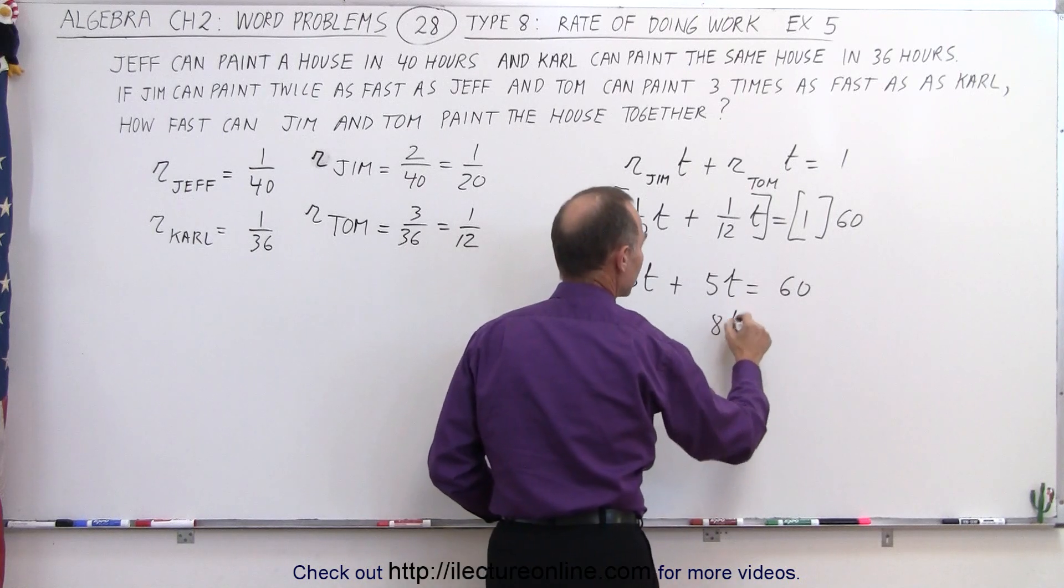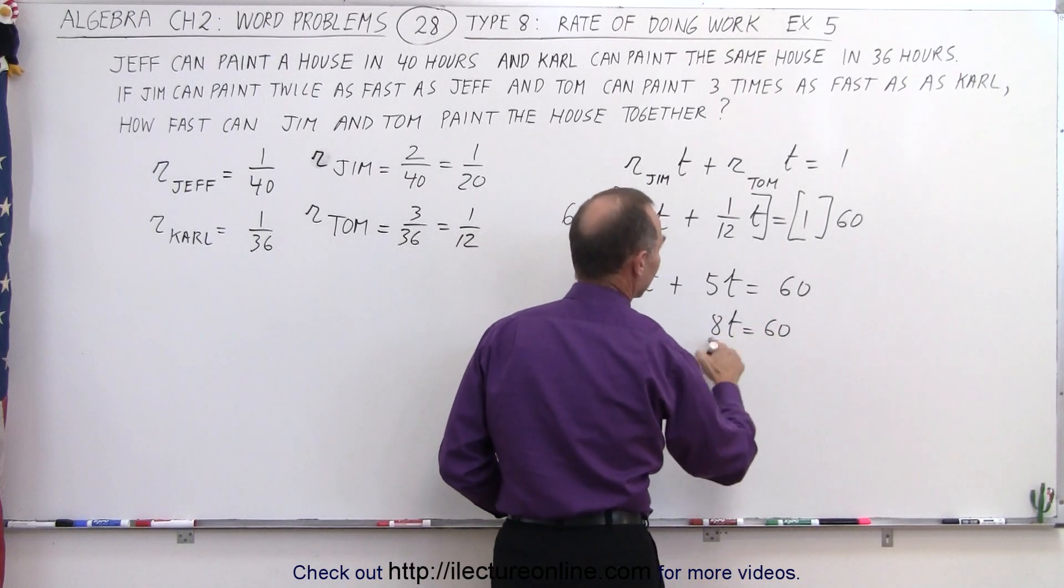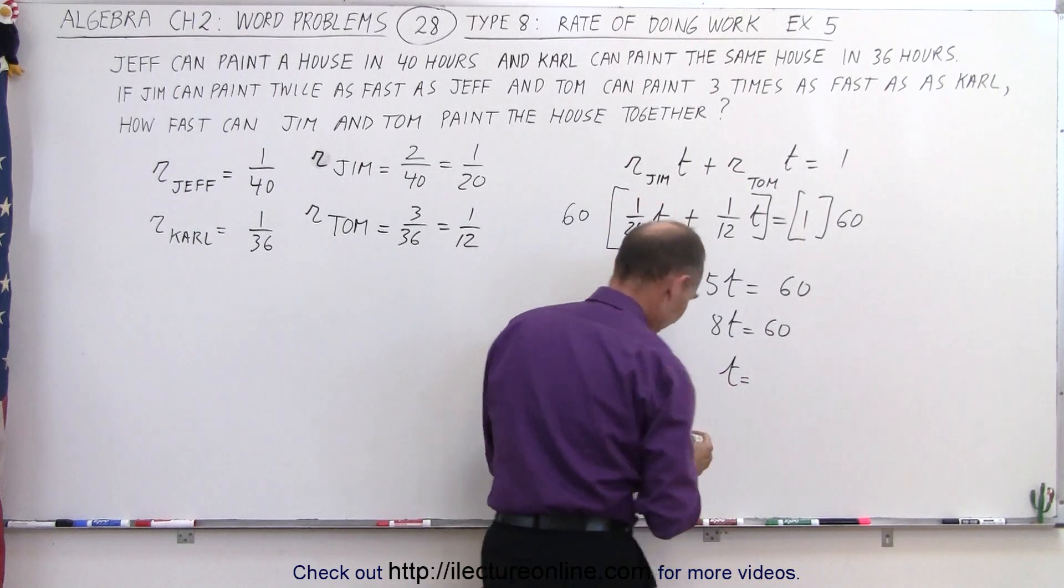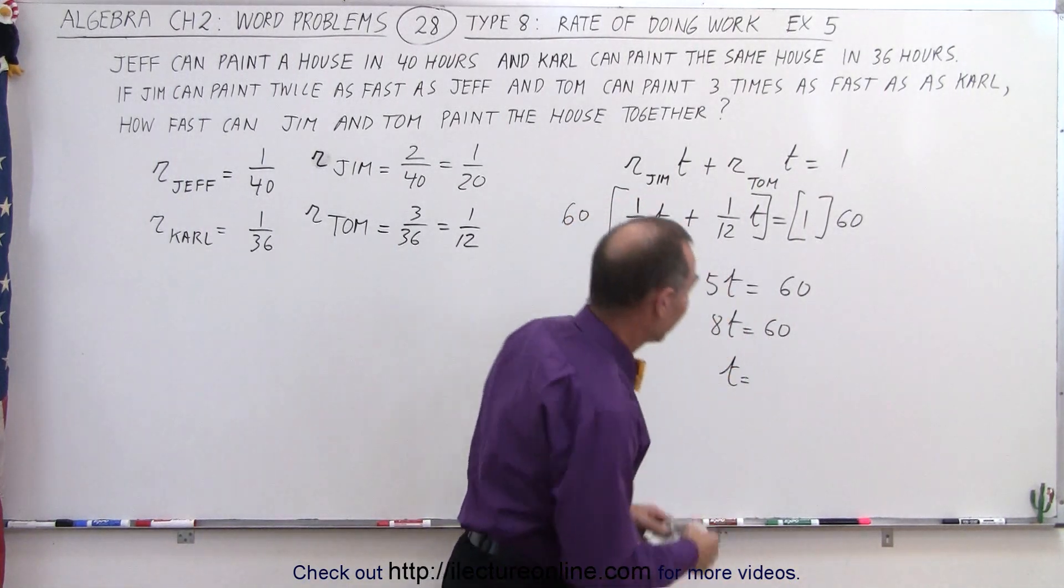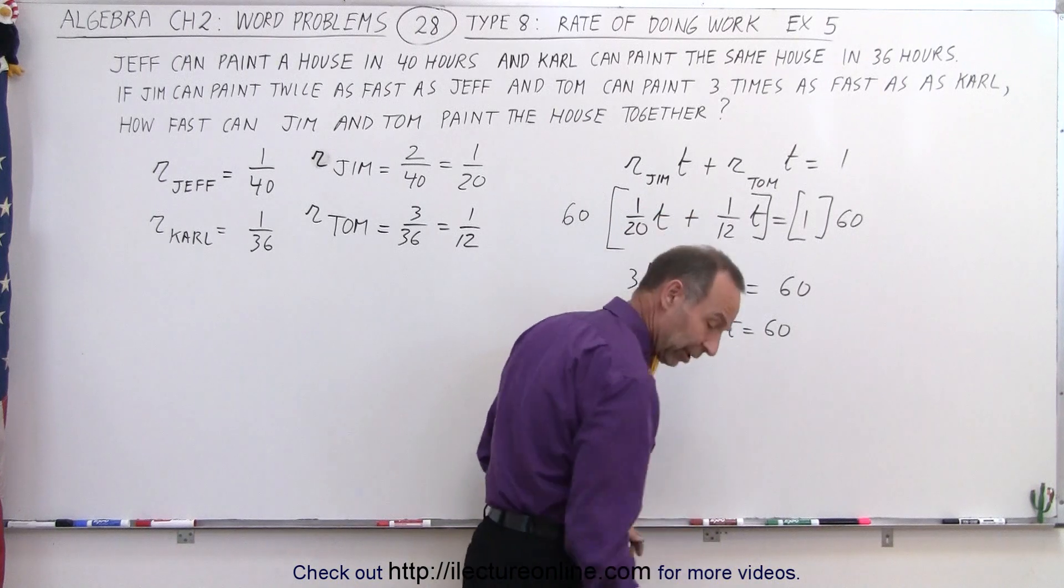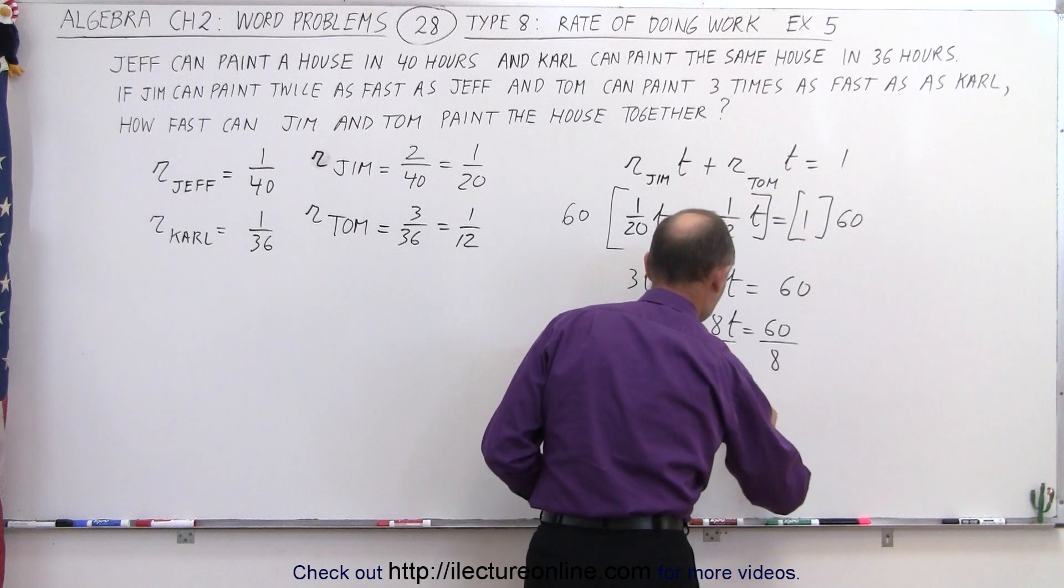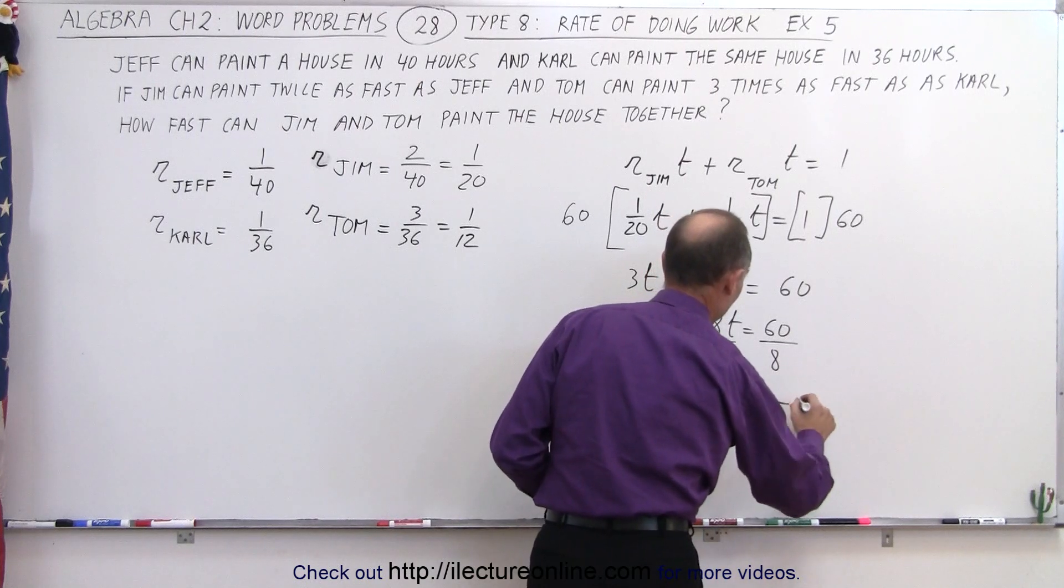Combine like terms, 8t is equal to 60, and 8 goes into 60 seven and a half times, so t is equal to, well, actually, I should write it out. I'm getting a bit lazy here. It's not a good thing. So divide both sides by 8, and we get t is equal to 7.5.